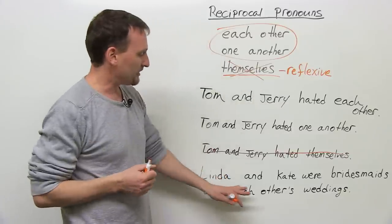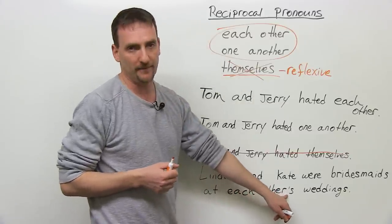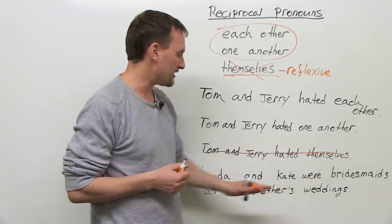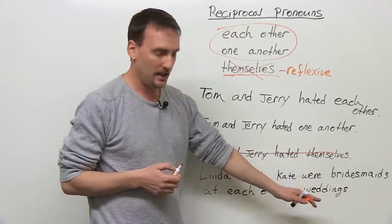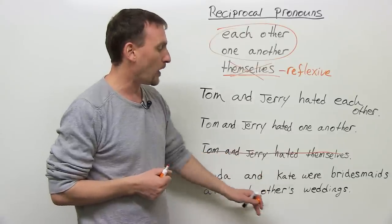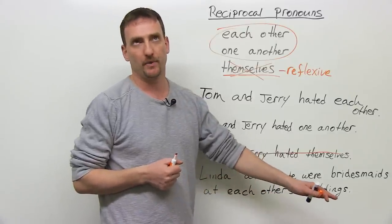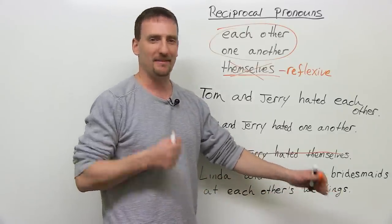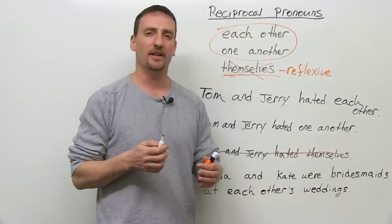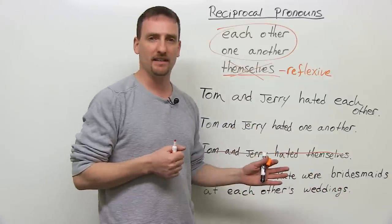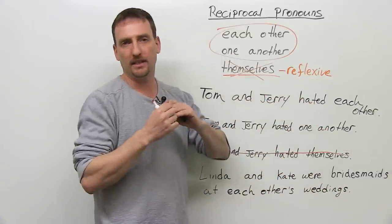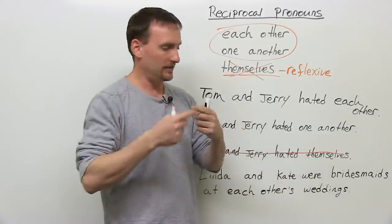Another situation we have is with the apostrophe. Linda and Kate were bridesmaids at each other's weddings. Linda and Kate were bridesmaids at one another's weddings. The meaning is basically the same idea — one to you, one back to me. Reciprocal actions.